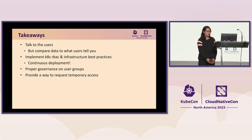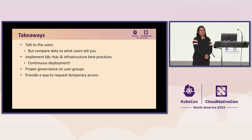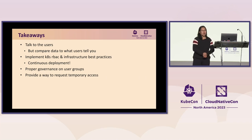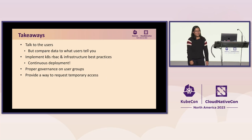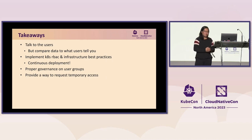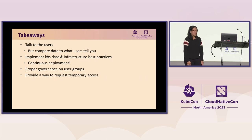Another infrastructure best practice is using continuous deployment and having things checked into code. We really felt the pain of manual processes from when Robinhood was first starting out. When we were cleaning up unused cluster roles, it was very hard to trace back what those roles were used for. During the cleanup, I accidentally removed a cluster role that was still in use. Because it was not on continuous deployment, it had to be recreated manually and backported into code. So it's really important to check all your resources into code and have it on CD.